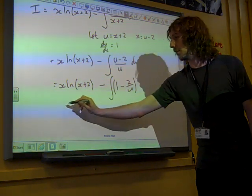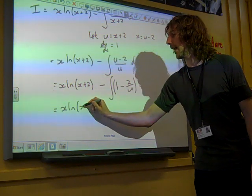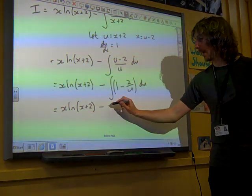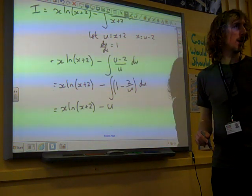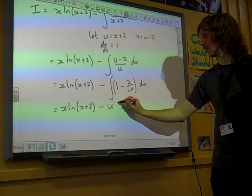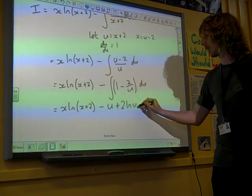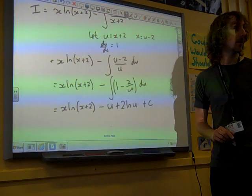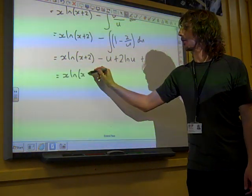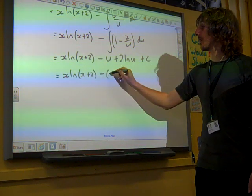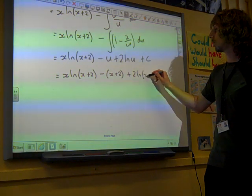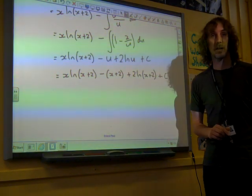And that's going to give us x ln(x+2). Integrate the one, we get u. Integrate two over u, and we get twice the natural log of u. And so, we've got x ln(x+2) minus x plus two plus 2 ln(x+2) plus C.